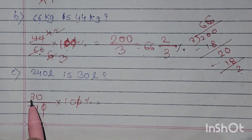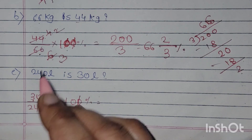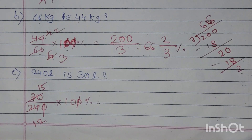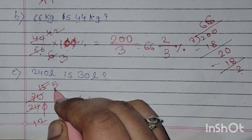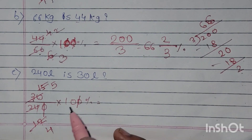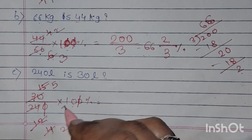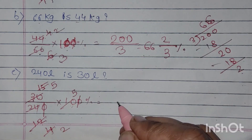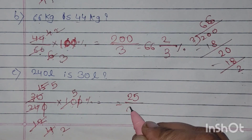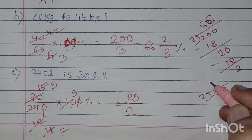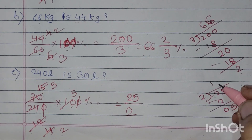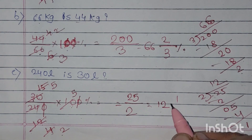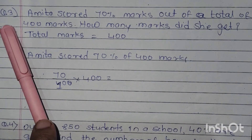अभी यहाँ पर: zeros cancel हो जाएंगे। 30 और 24, 2 के table में आते हैं, तो 2 से divide करेंगे: 15 into 2 is 30, और 12 into 2 is 24. आगे देखो — 15 और 12, 3 के table में हैं: 3 into 5 is 15, 3 into 4 is 12. अभी 2 के table में: 2 into 2 is 4, 2 into 5 is 10. ऊपर वाले numbers multiply करो: 5 into 5 is 25, नीचे 2 बचा। Divide करो: 2 into 1 is 2, 0 लेना है, 2 into 2 is 4 — remainder 1. तो यह है 12 and 1 upon 2 percent.